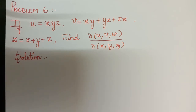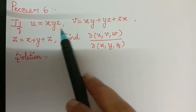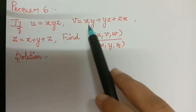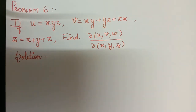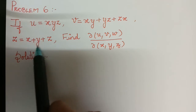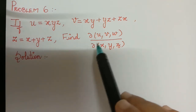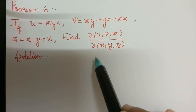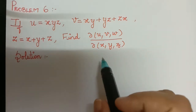Dear students, the next problem under the topic Jacobian is: if u is equal to xyz, v equal to xy + yz + zx, and w is equal to x plus y plus z, find the Jacobian of u, v, w with respect to x, y, and z. Now we shall see the solution of this problem.